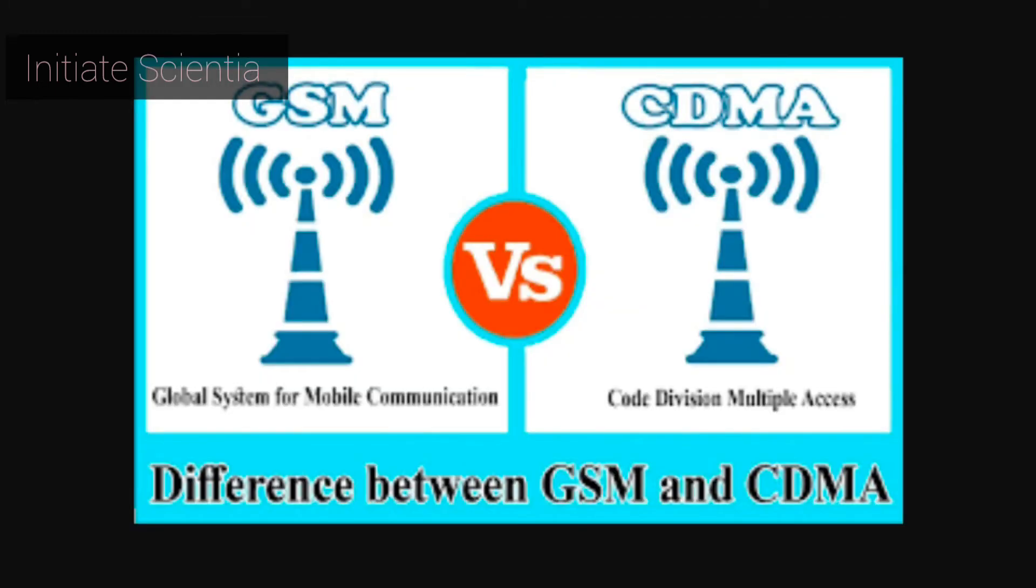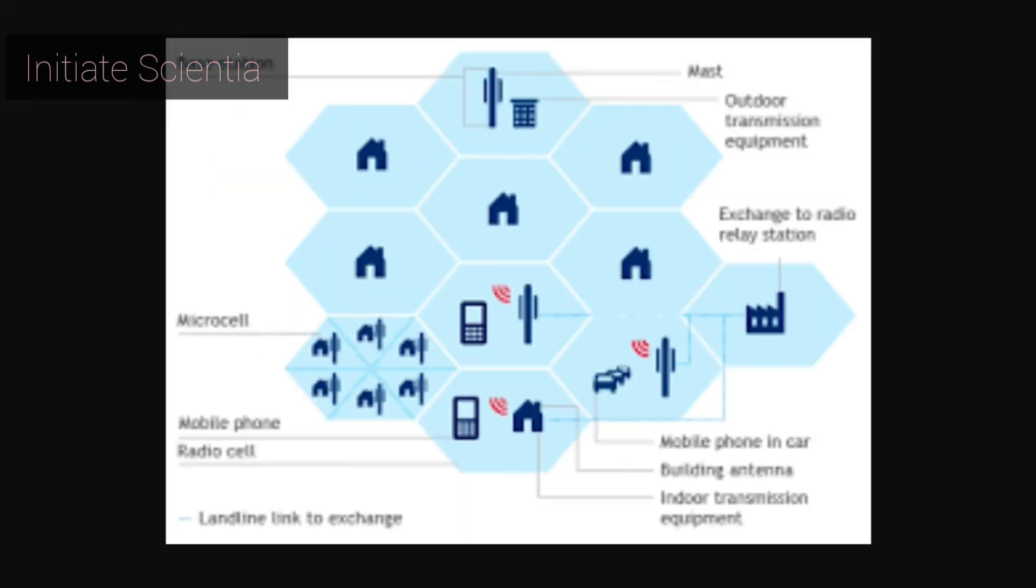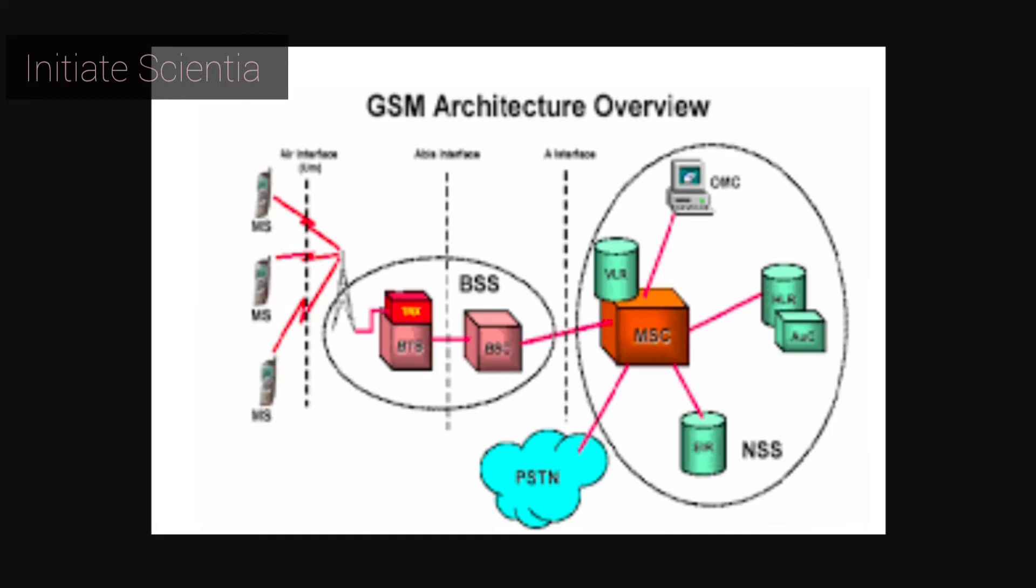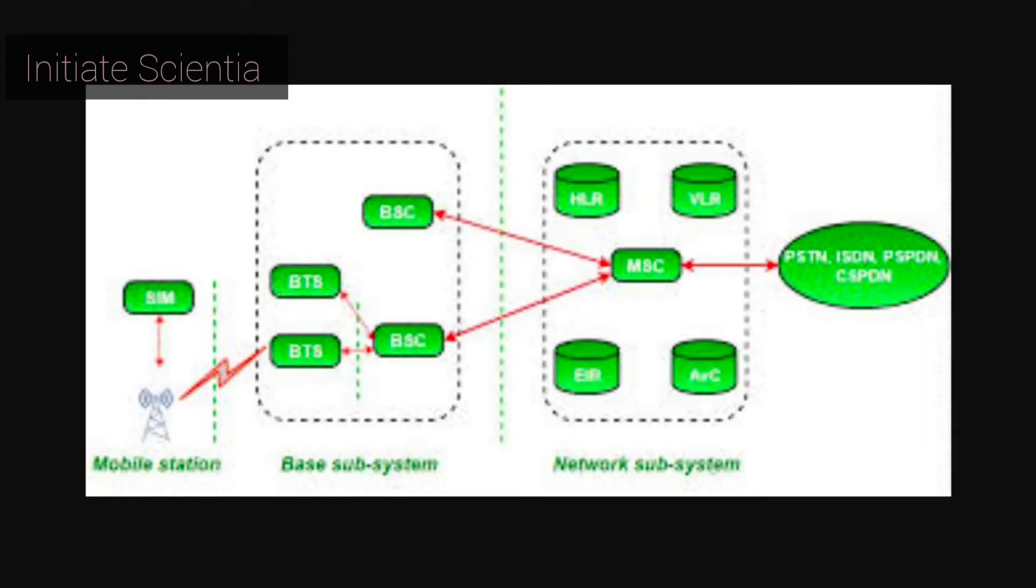GSM carrier frequencies. GSM networks operate in a number of different carrier frequency ranges, separated into GSM frequency ranges for 2G and UMTS frequency bands for 3G, with most 2G GSM networks operating in the 900 MHz.